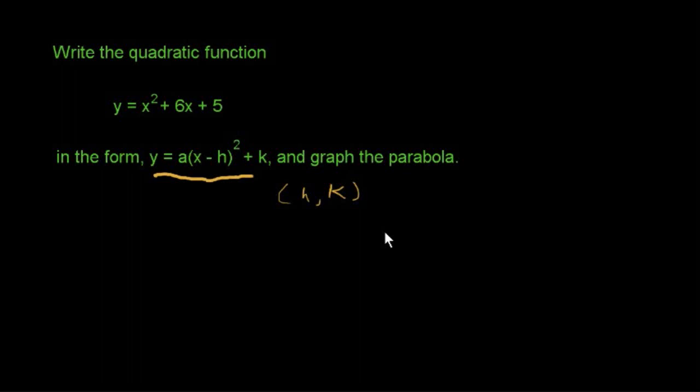We are asked to write the quadratic function y equals x squared plus 6x plus 5 in the vertex form, y equals a times x minus h squared plus k, and graph the parabola.